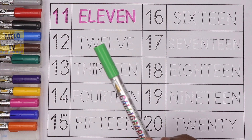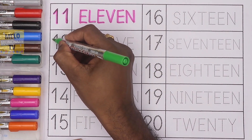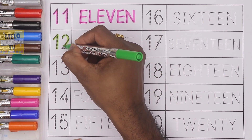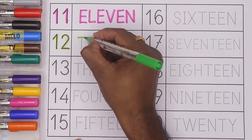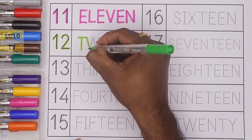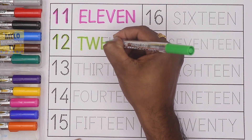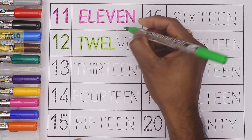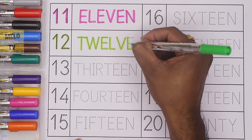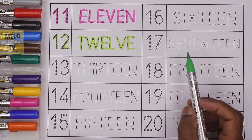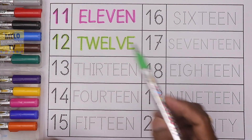Let's take green color — this is light green color — to write the number 12. 1, 2, 12. And the spelling is T W E L V E. 12. Let's repeat once again: T W E L V E, 12.